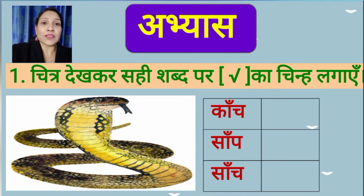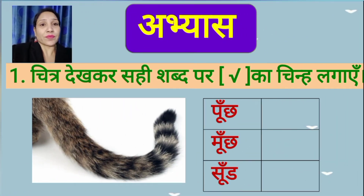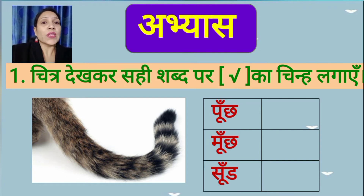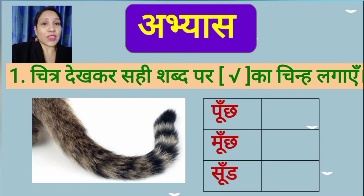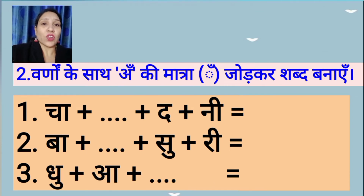You can see the picture here and read the words. The picture is related to 'saanj', so we will tick on 'saanj'. Now the next picture is related to 'pooja', so we will tick on 'pooja'.